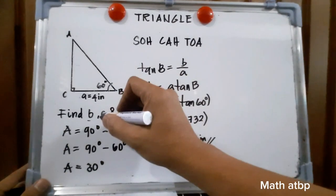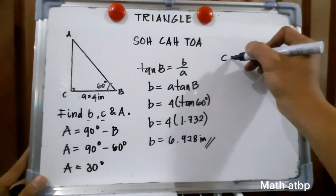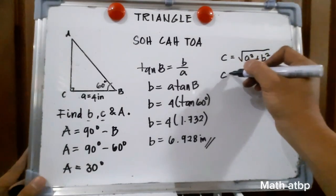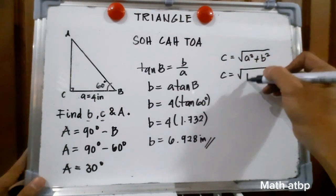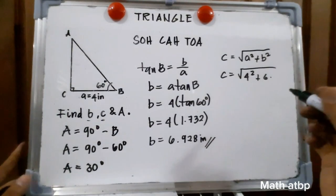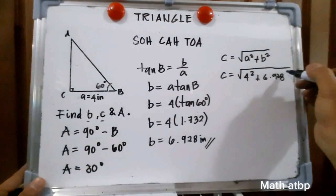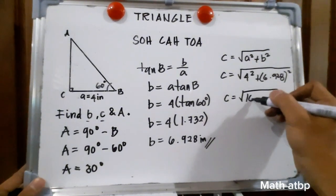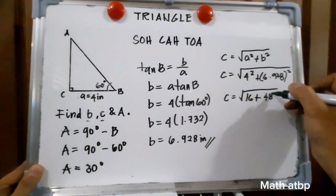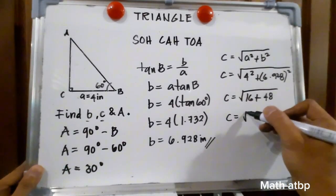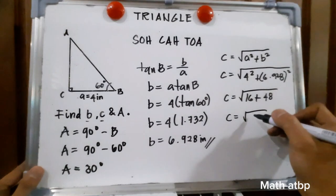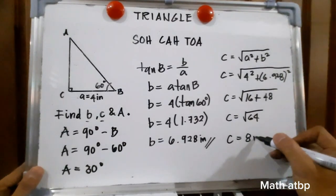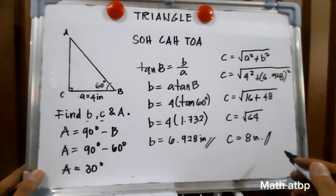Now, let us solve for side C. C is equal to the square root of A squared plus B squared. So C is equal to the square root of 4 squared plus 6.928 squared, which is the square root of 16 plus 48, giving us the square root of 64. The square root of 64 is 8, so we have C equal to 8 inches. I hope you got it. Thank you.